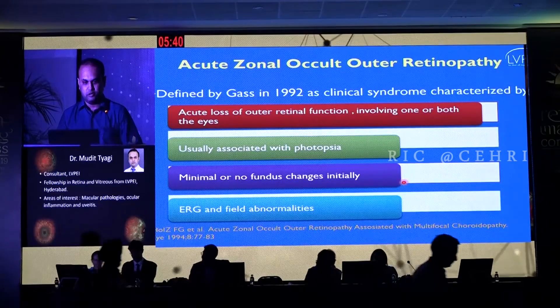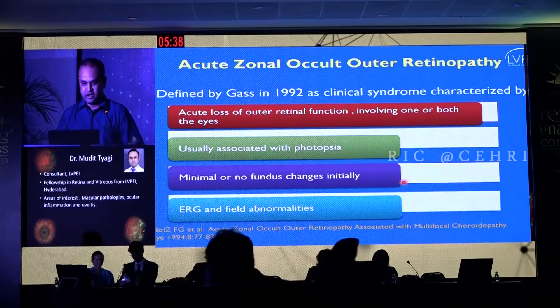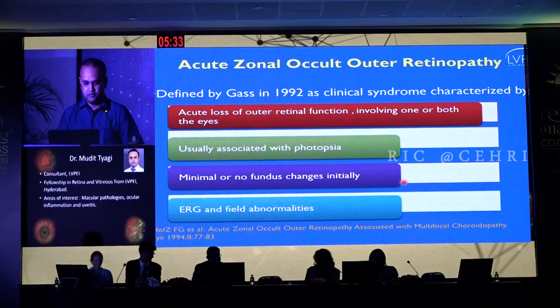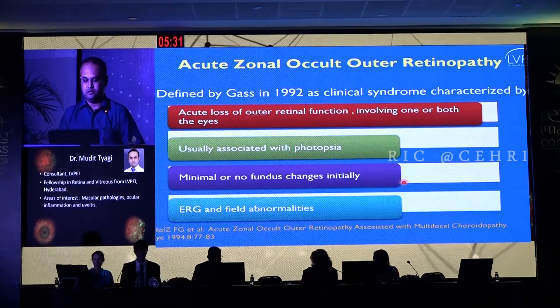I will be speaking on multimodal imaging in AZOOR. As we all know, AZOOR was first defined by Gass in 1992 as a syndrome with acute loss of outer retinal function, usually associated with photopsia, without minimal significant fundus changes initially — though they do appear in the course of the disease — and is characterized by ERG and field abnormalities. Gass hypothesized this to be probably a viral infection involving the photoreceptors, whereas Dr. Jampol's group thought of it to be an autoimmune and inflammatory process.